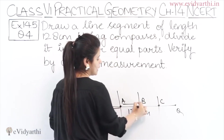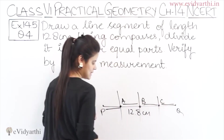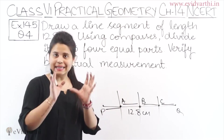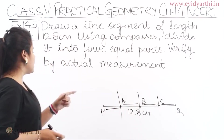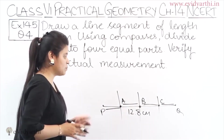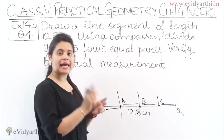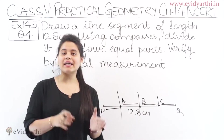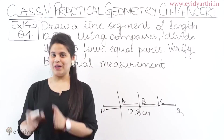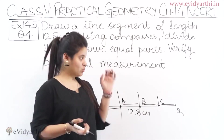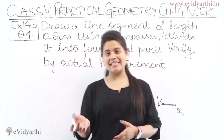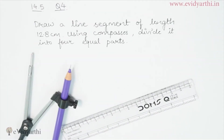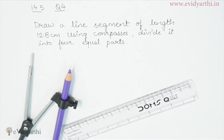PA should equal AB, BC, and CQ — these are 4 equal parts. To verify it, we measure with actual scales using the ruler's help. This is a construction question, so let's proceed. We have understood the question and now have to do the construction. First, we will draw a line segment of 12.8 cm using our ruler.